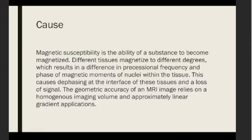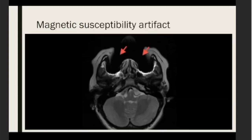The cause of magnetic susceptibility artifact is the ability of a substance to become magnetized. Different tissues magnetize to different degrees, which results in a difference in the frequency and phase of magnetic moments of nuclei within the tissue. This causes dephasing at the tissue interfaces with loss of signal. The geometric accuracy of an MRI image relies on homogenous image volume and approximately linear gradient applications. Here is another example showing magnetic susceptibility artifact in a patient with tooth braces.